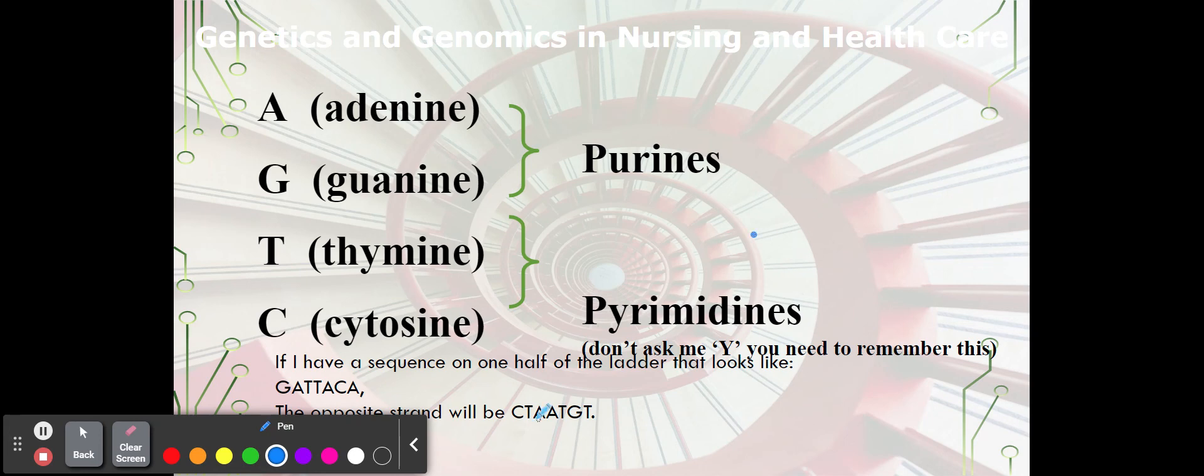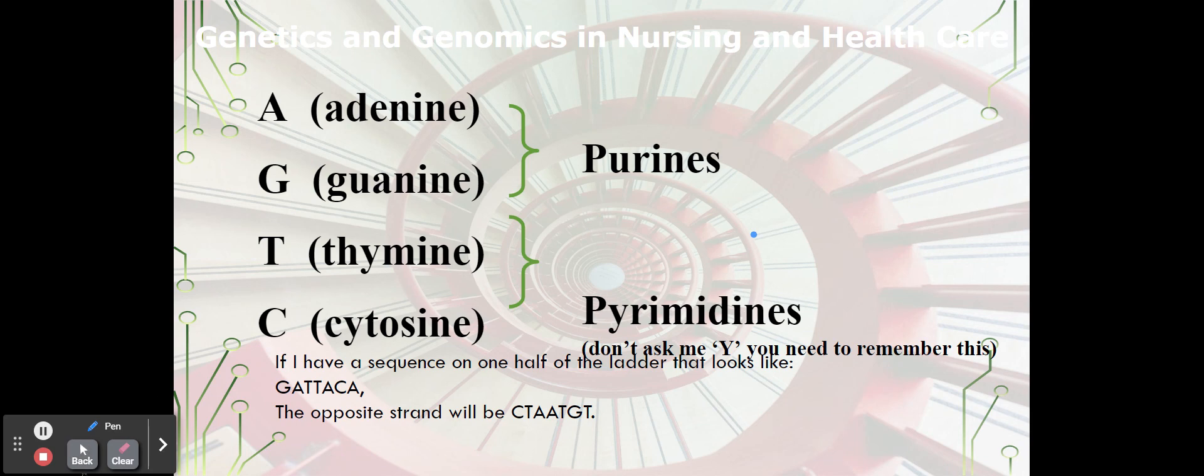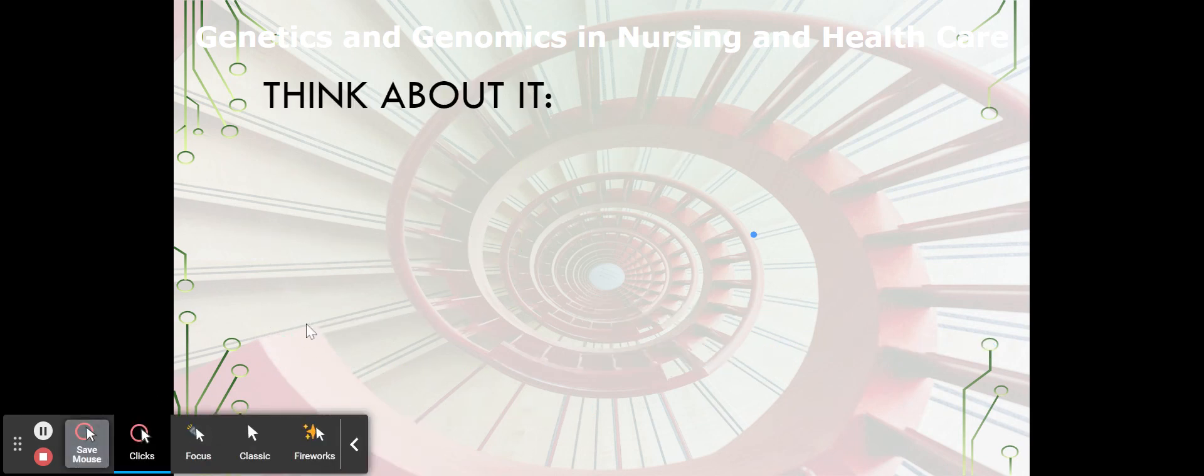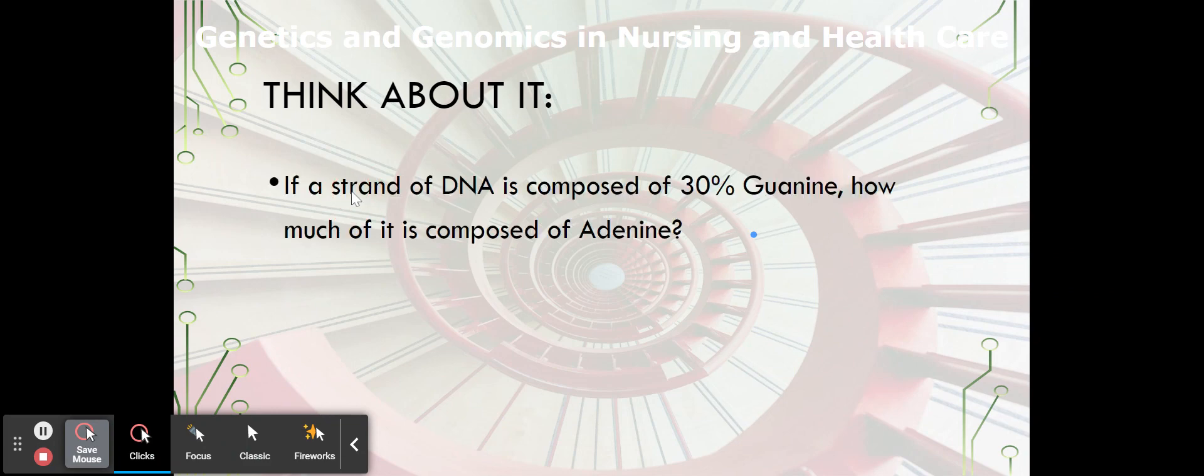So we might do some fun things with that, say, on a quiz or something like that. Let's see. There. Okay. So think about it. Let's do a little test. If a strain of DNA is composed of 30% guanine, how much of it is composed of adenine? And these are the kind of questions that scientists ponder. So why not? Let's do it.